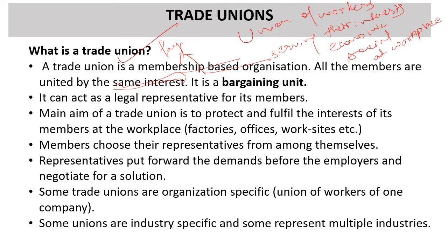Trade unions represent similar sorts of workers — of a particular company, organization, or industry. It is a bargaining unit and it bargains with the employer, government, or its representatives — in the case of government organizations in India, public sector undertakings. It can act as a legal representative for its members. The main aim is to protect and fulfill the interest of its members at the workplace — not personal fights.